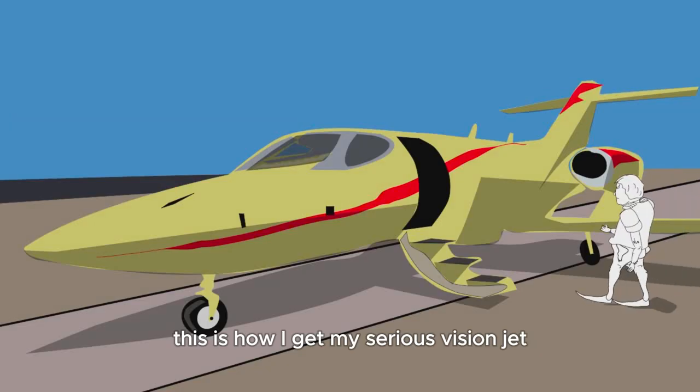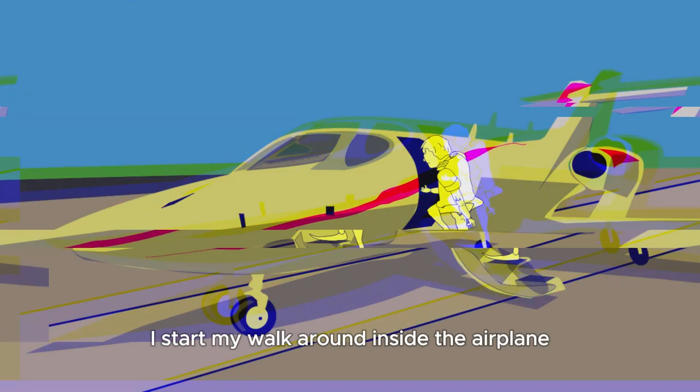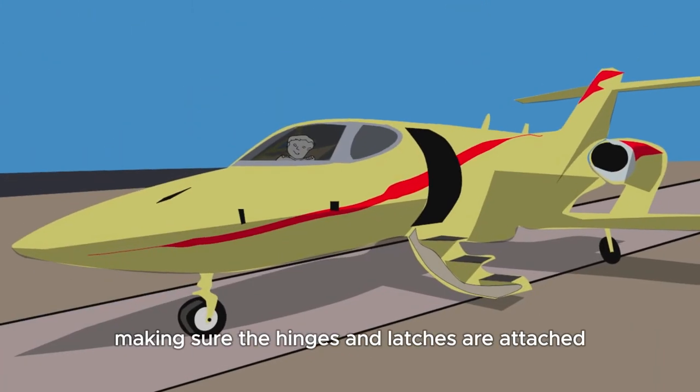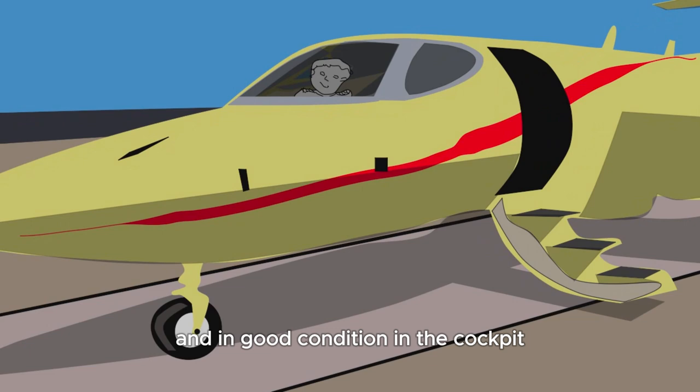This is how I get my Cirrus Vision Jet ready for a flight. I start my walk around inside the airplane and make sure to check the cabin door on my way in, making sure the hinges and latches are attached and in good condition.